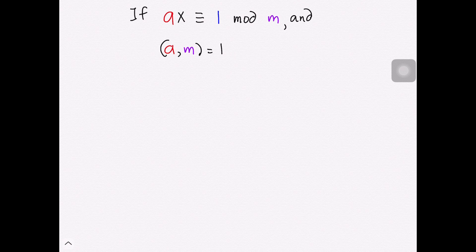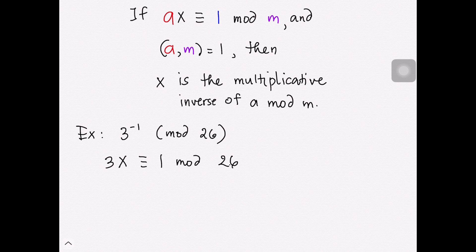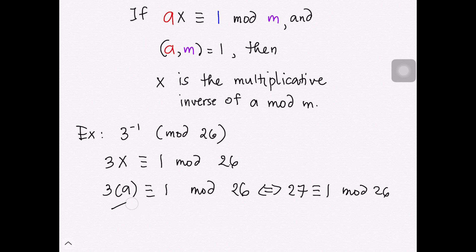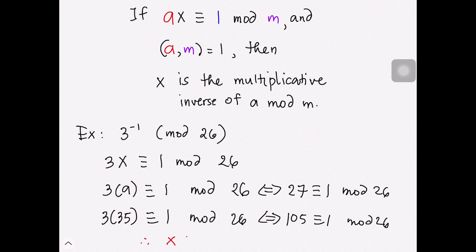To solve such a congruence, we need the multiplicative inverse of A modulo M. We consider X to be a multiplicative inverse of A modulo M if A × X ≡ 1 (mod M), provided A and M are relatively prime. For example, finding the inverse of 3 modulo 26 means solving 3X ≡ 1 (mod 26). Notice that 3 × 9 = 27 ≡ 1 (mod 26), so X = 9 works. Also, 3 × 35 = 105 ≡ 1 (mod 26). While there are infinitely many solutions, 35 ≡ 9 (mod 26), so they belong to the same equivalence class of 9 modulo 26.